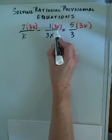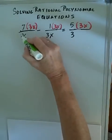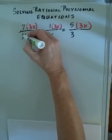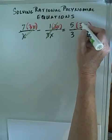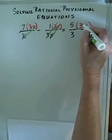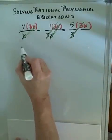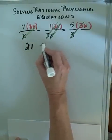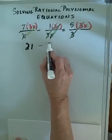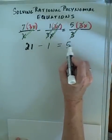In the first term we cancel out the x's. In the second term we cancel out both the 3's and the x's. In the third term we cancel out the 3. This leaves us with 7 times 3 in the first term — that gives us 21 — minus 1, equals 5 times x, which is 5x.